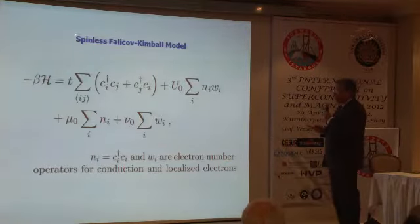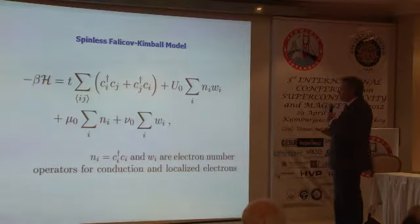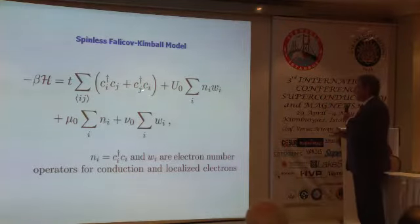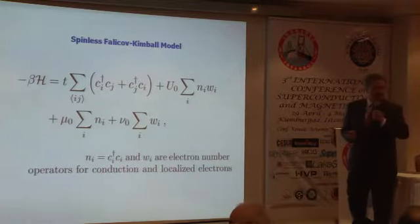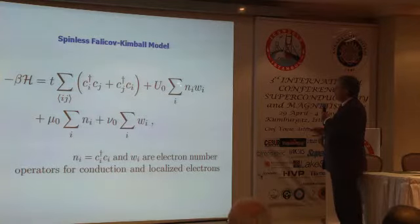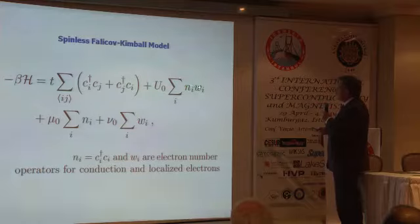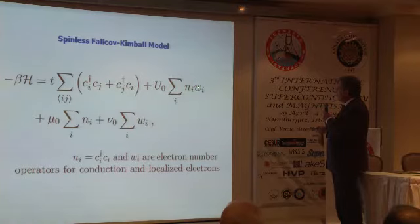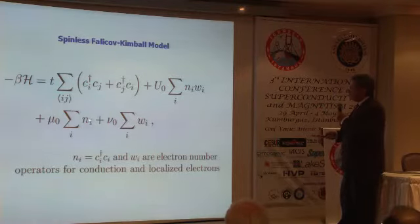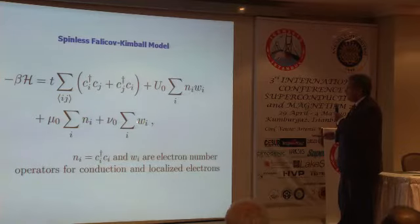The spinless Falicov-Kimball model is a model which at each site has two types of Hamiltonians: bound Hamiltonians and mobile Hamiltonians. There's an on-site interaction — notice there's a minus sign in front of my Hamiltonian — between the number operator of the electrons which do not hop on each side, and these are the mobile electrons. These are operators which are 0 and 1. There's also a chemical potential that controls both the mobile electrons and the on-site electrons.